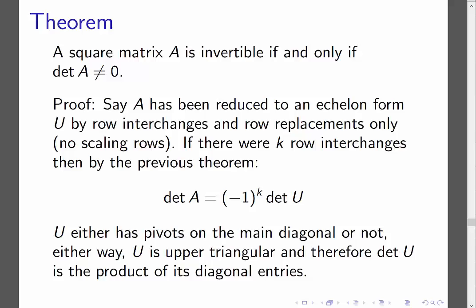And if there's a 0 on the main diagonal, then the determinant is going to be 0, because we multiply all the diagonal entries to get the determinant. If there are no 0s on the main diagonal, then the determinant is not going to be 0, because the determinant is the product of the entries on the main diagonal of upper triangular.